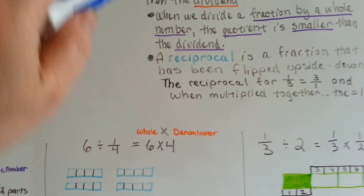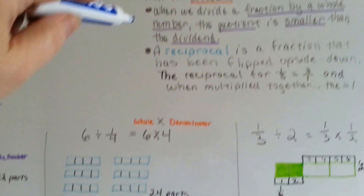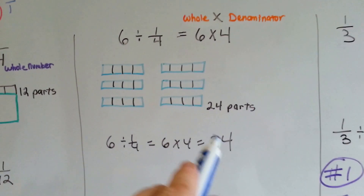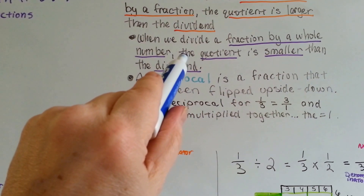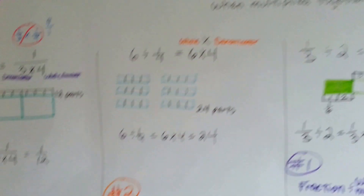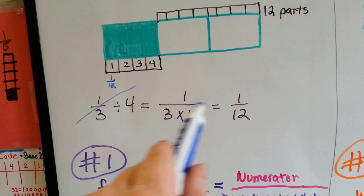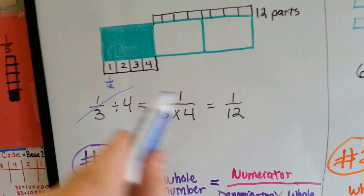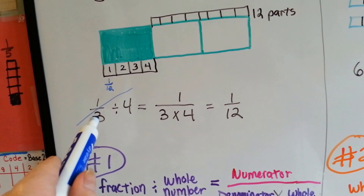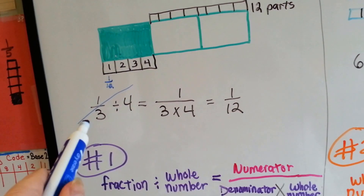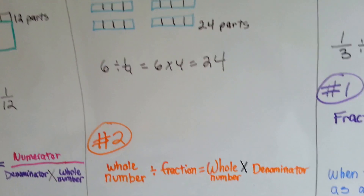That goes with our orange rule: when the whole number is first, the quotient is larger than the dividend. The 24 is larger than the 6. And our purple rule: when the fraction is first, the quotient is smaller than the dividend. Here's the fraction first and the quotient is smaller — 1 twelfth is way tinier than 1 third. Fraction first, quotient is smaller than the dividend. Whole number first, quotient is larger than the dividend.